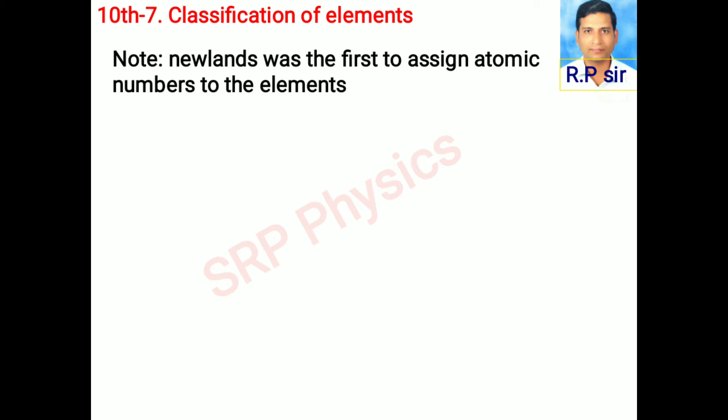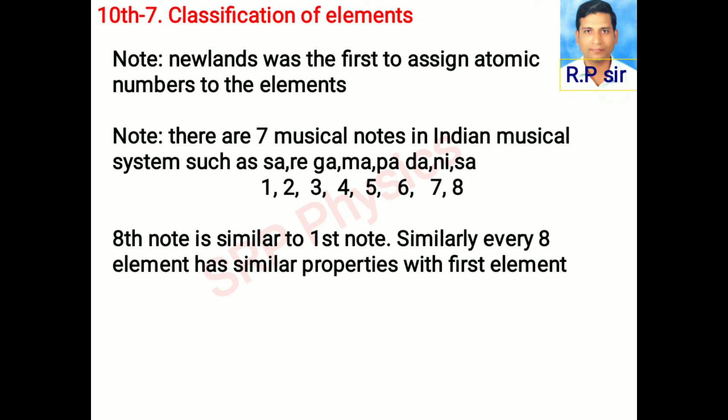Newland was the first to assign atomic numbers to the elements. There are seven musical notes in the Indian musical system such as Sa, Re, Ga, Ma, Pa, Da, Ni, Sa — i.e., 1, 2, 3, 4, 5, 6, 7, 8. The eighth note is similar to the first note. Similarly, every eighth element has similar properties to the first element.